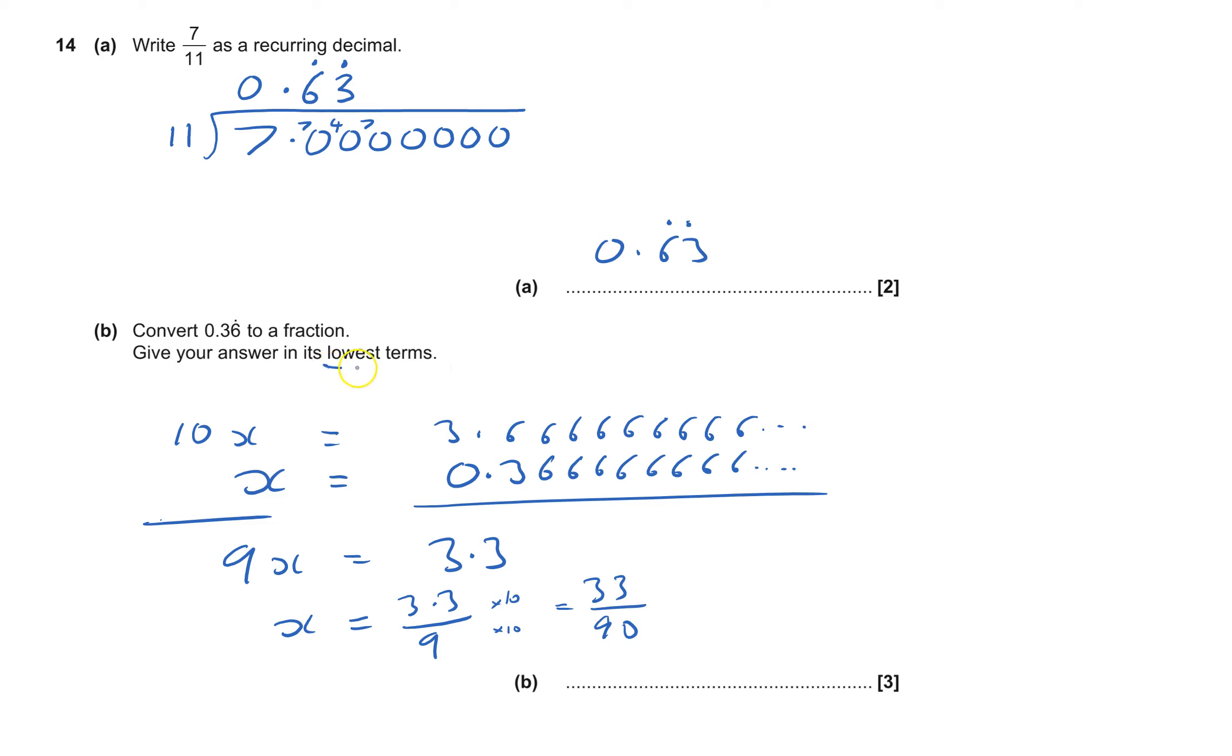It says give the answer in its lowest terms, so I can see a 3 goes into both. I'm going to divide top and bottom by 3, and that gives me 11 over 30. And that's my answer, and that's problem 14 done.